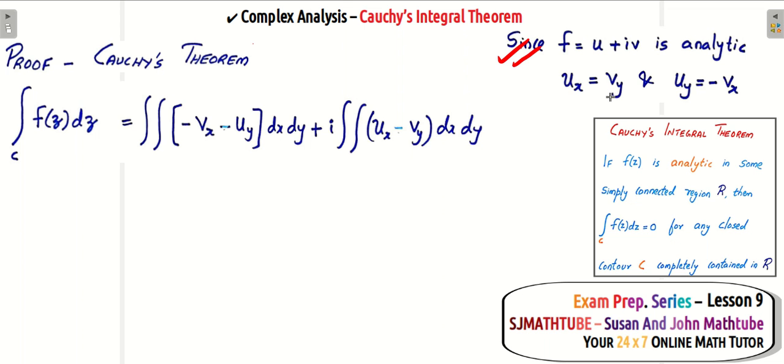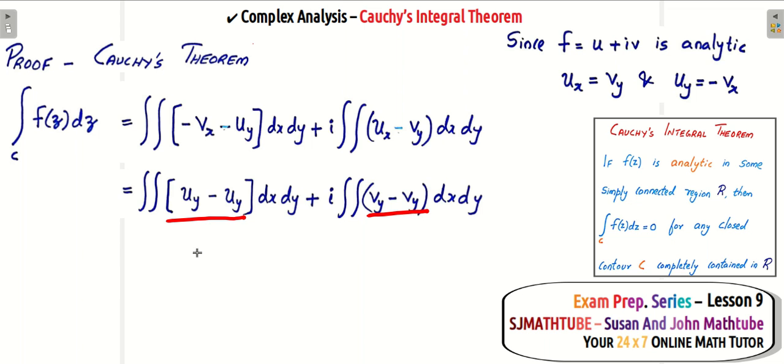ux is equal to vy - wow, good news - and uy equal to minus vx. So look at this, this minus vx over here can be replaced with ux or vice versa, and that's it. So integral of 0 plus i into integral of 0, so that's it.